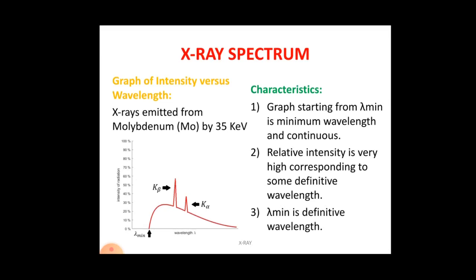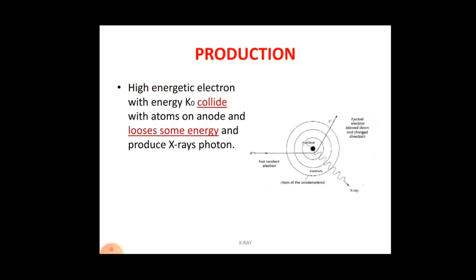The third characteristic is that lambda minimum is mostly considered as the definitive wavelength in practice. All points on the graph are above the lambda minimum wavelength.